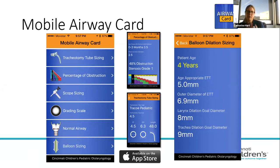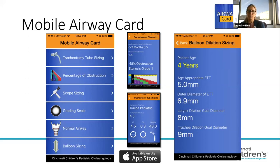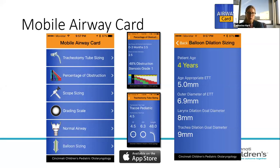We used to carry a laminated card with grades of stenosis and corresponding sizes. Now we've developed a free app called the Airway Card, available for Apple and Samsung phones. It's an interactive app that helps you grade a stenosis, determine percentage of obstruction, and has information about tracheostomy tube sizing, balloon sizing, and how to pick the appropriate balloon size. It's a handy cheat sheet everyone is welcome to use.